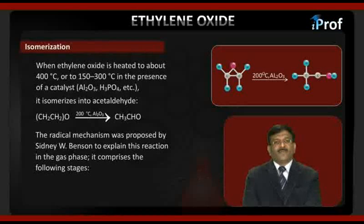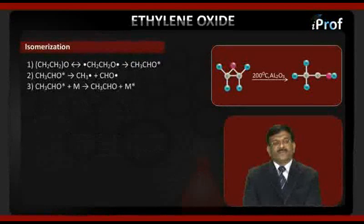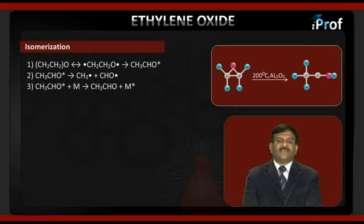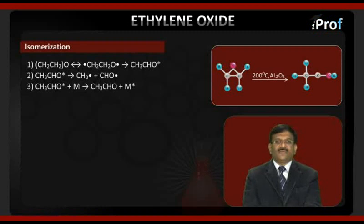The conversion to acetaldehyde proceeds via an intermediate compound. Ethylene oxide gives an intermediate compound, which further gives a product. This intermediate further gives a methylene group plus an oxygen-containing group, and further, the radical plus M — where M refers to the wall of the reaction vessel — to give the corresponding acetaldehyde.